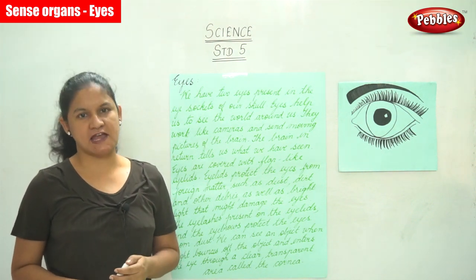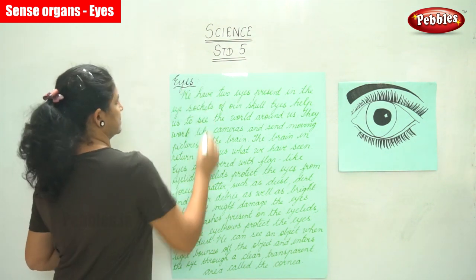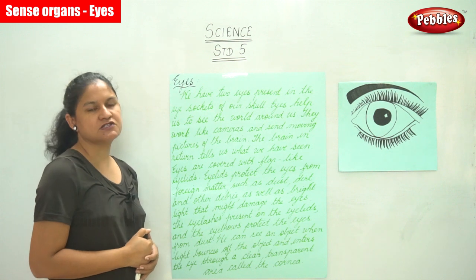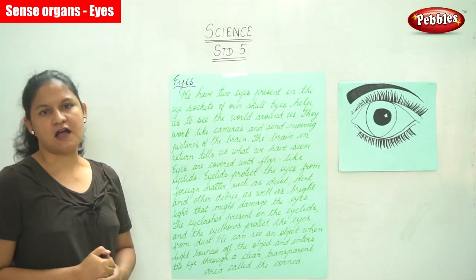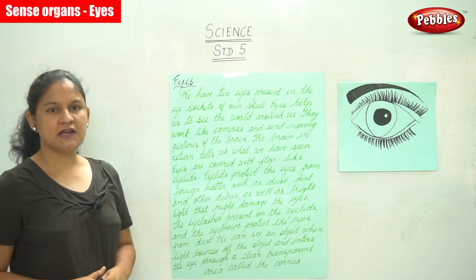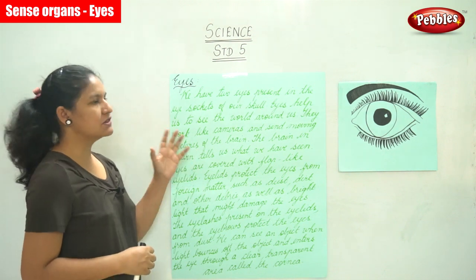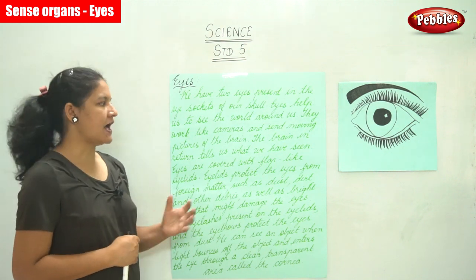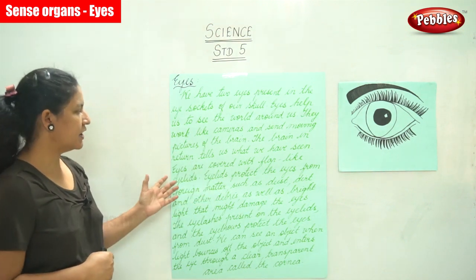We have two eyes that are present in the eye sockets of our skull. It is mainly because of the presence of the eyes that we are able to see the world around us. They work like cameras and send moving pictures to the brain, and the brain in return tells us what we have seen.